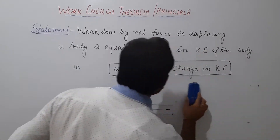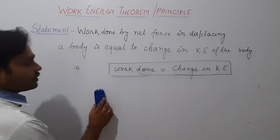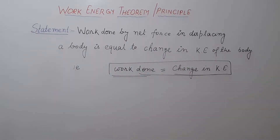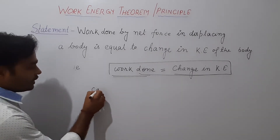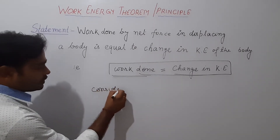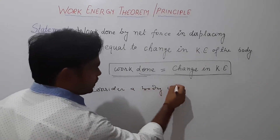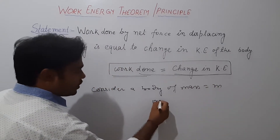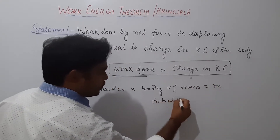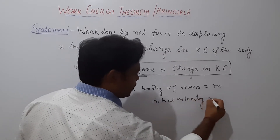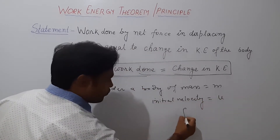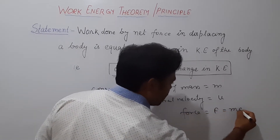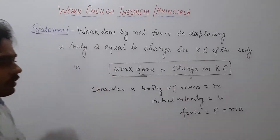It means in any case, if we do work against the force or in the direction of the force, the work done by the force is equal to the change in kinetic energy of the body. This is the work-energy theorem. Now we have to prove this theorem. We need to prove: work done is equal to change in kinetic energy of the body. Consider a body of mass M, and suppose some force F is applied on the body.